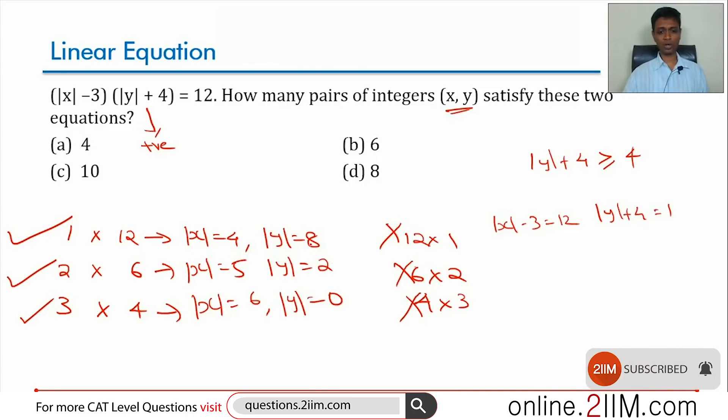Now let's drill down. 1 into 12: |x| is 4, |y| is 8. Remember, if |x| is 4, x can be plus or minus 4. |y| is 8, y can be plus or minus 8. You could have (4, 8), (-4, 8), (4, -8)...